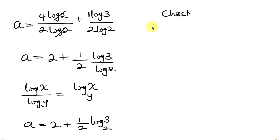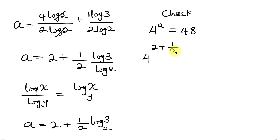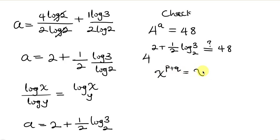Remember the given question: 4 to the a equal to 48. Our value for a is 2 plus 1 over 2 log 3 base 2, and we are solving to see if we get 48. We can apply the law of indices that says when I have x to the p plus q, this is the same as x to the p times x to the q. So this becomes 4 squared times 4 to the 1 over 2 log 3 base 2.